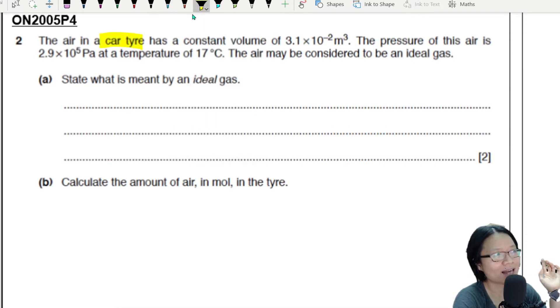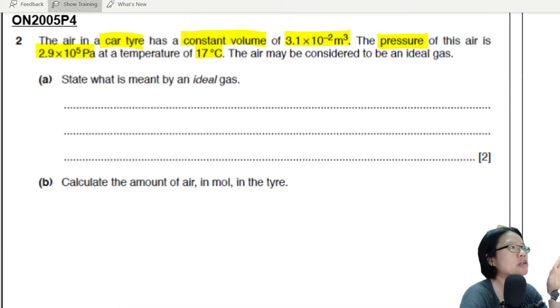...has a constant volume of 3.1 times 10 to the power of negative 2 meter cubed. The pressure of the air is 2.9 times 10 to the power of 5 at a temperature of 17 degrees celsius.